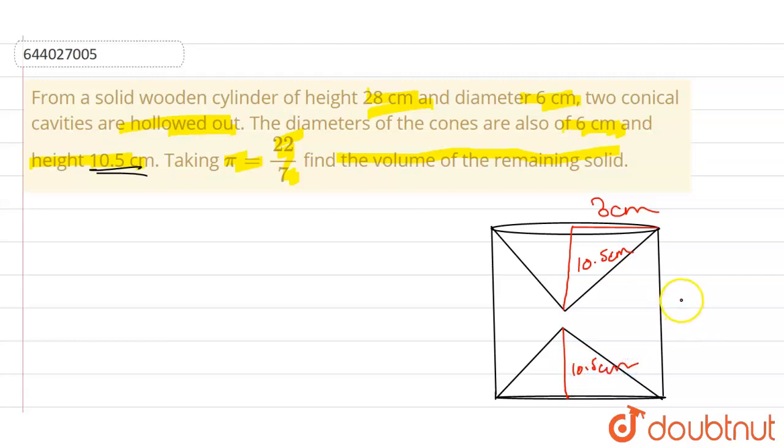Now we have to find the volume of the remaining solid. That means if we subtract the volume of the cone twice, because we have two cones here, we will get the remaining volume of the solid.